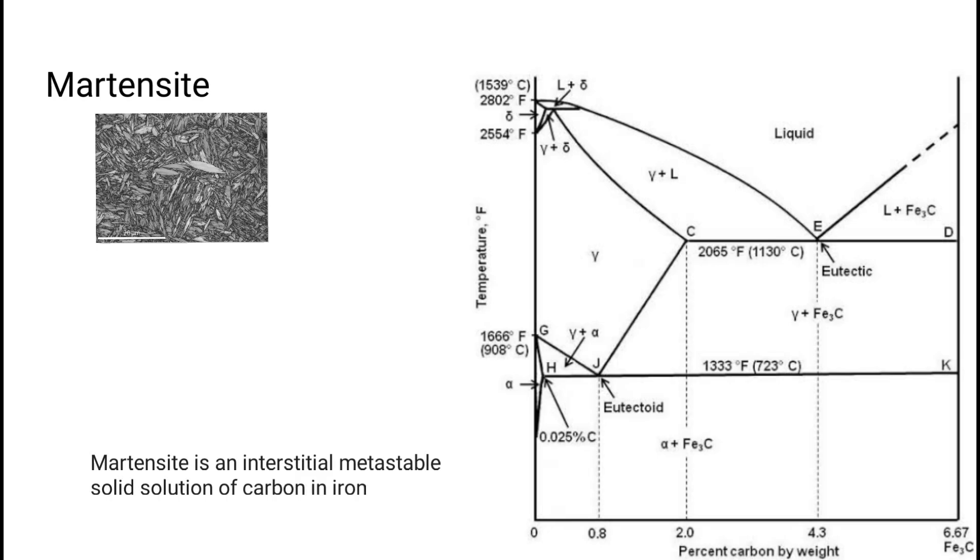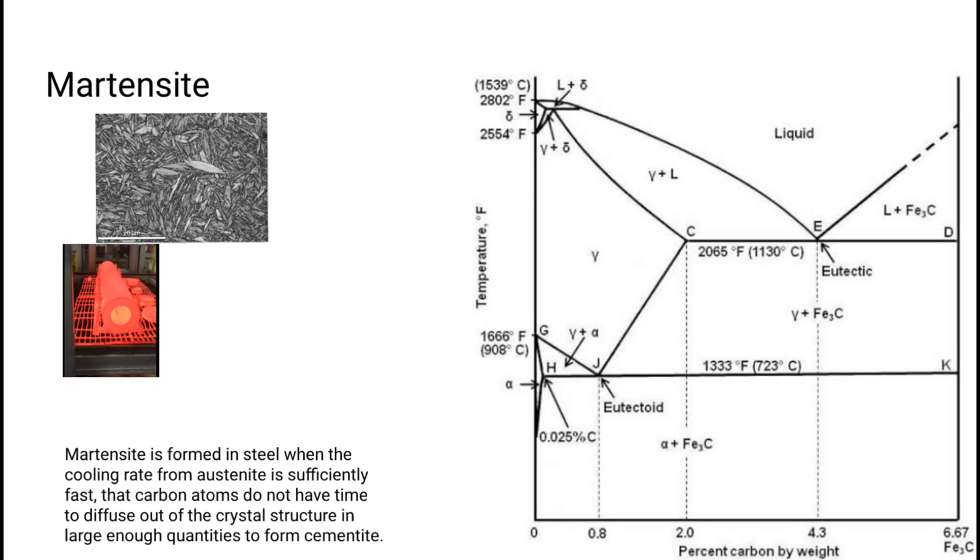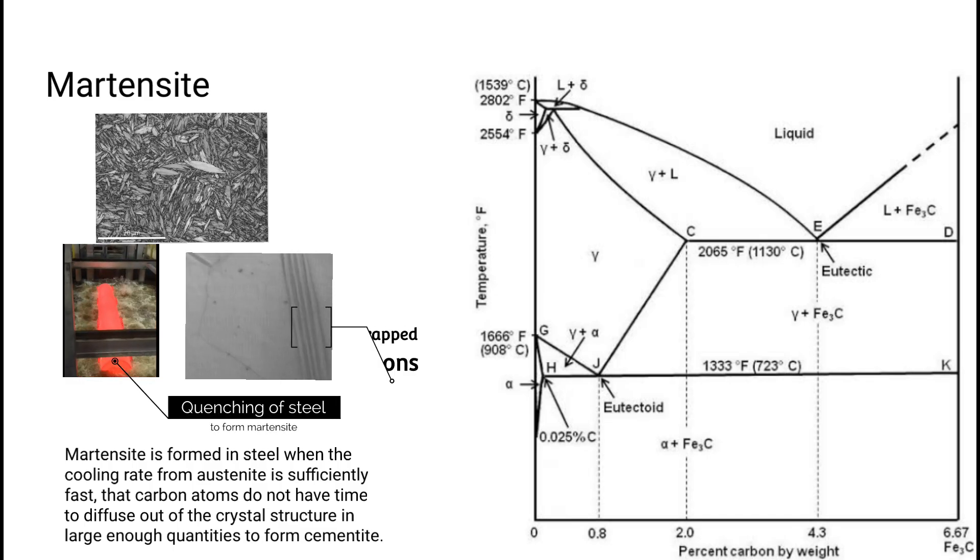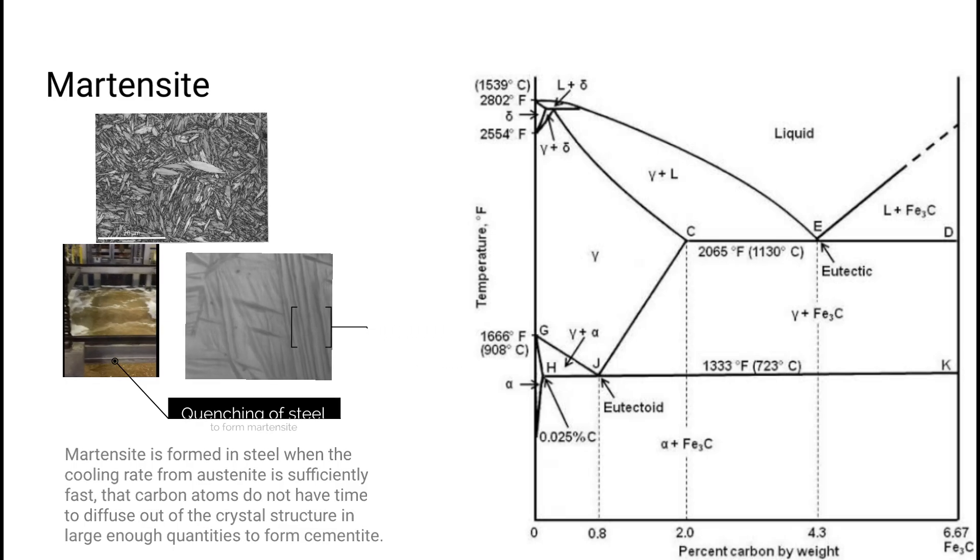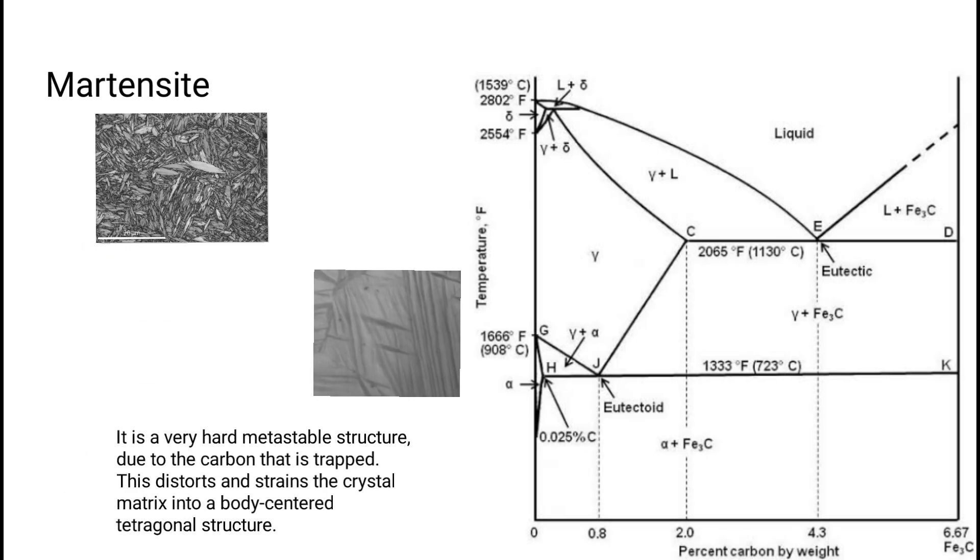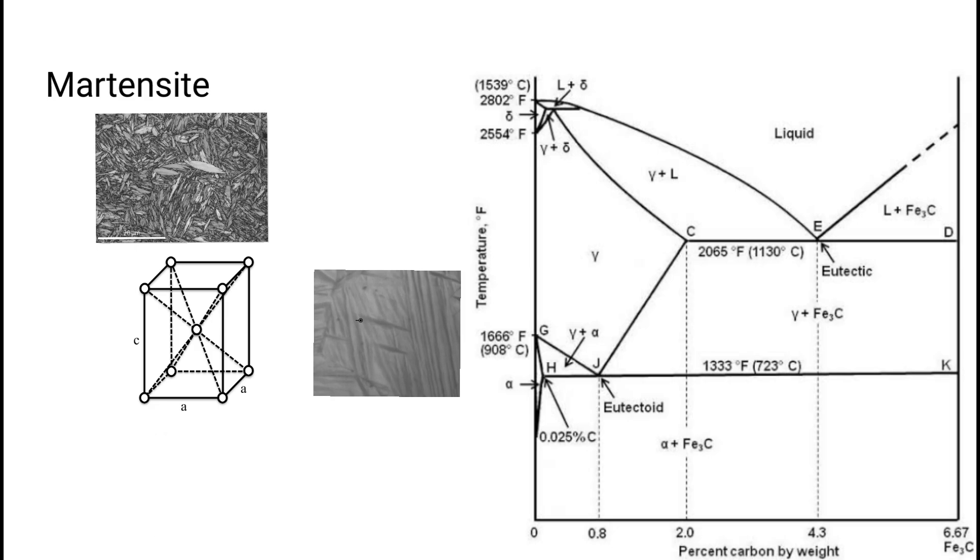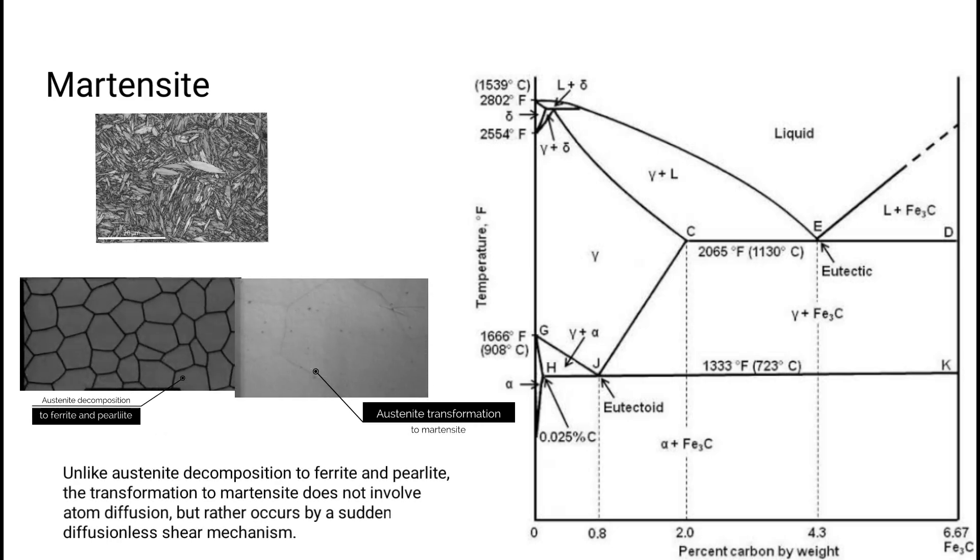Martensite is an interstitial metastable solid solution of carbon in iron. Martensite is formed in steels when the cooling rate from austenite is sufficiently fast that carbon atoms do not have enough time to diffuse out of the crystal structure in large enough quantities to form cementite. It is a very hard metastable structure due to the carbon that is trapped. This distorts and strains the crystal matrix into a body-centered tetragonal structure.